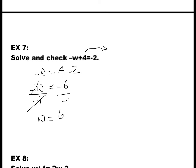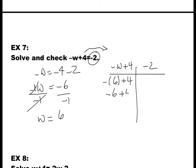To check: on the left, write negative w plus 4; on the right, write negative 2. Substitute w equals 6: negative 6 plus 4. Use brackets for BEDMAS. Negative times 6 gives negative 6, plus 4 equals negative 2. On the right, negative 2 stays as negative 2. Both sides equal negative 2, so the solution is correct.